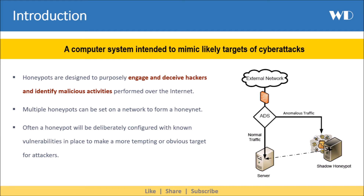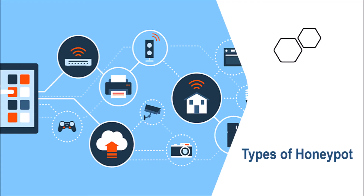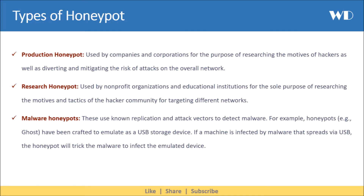Multiple honeypots can be set on a network to form a honeynet. Often a honeypot will be deliberately configured with known vulnerabilities in place, to make a more tempting or obvious target for attackers. Let's understand what are various types of honeypots. First we have the production honeypot. They are used by companies and corporations for the purpose of researching the motives of hackers and attacks on the overall network.